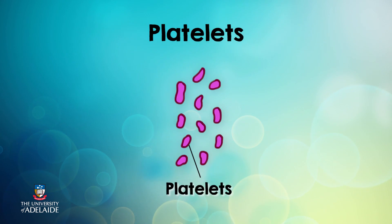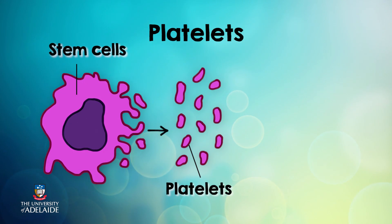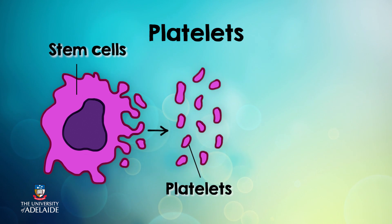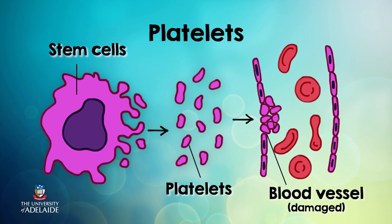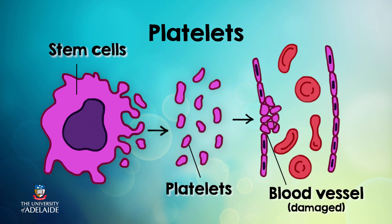The last of our formed elements are just as important and these are referred to as platelets. Platelets are actually fragments of cytoplasm that have come from precursor stem cells in the bone marrow. Platelets are responsible for the sealing off of damaged, broken blood vessels. They are extremely important in initiating the body's blood clotting mechanisms.